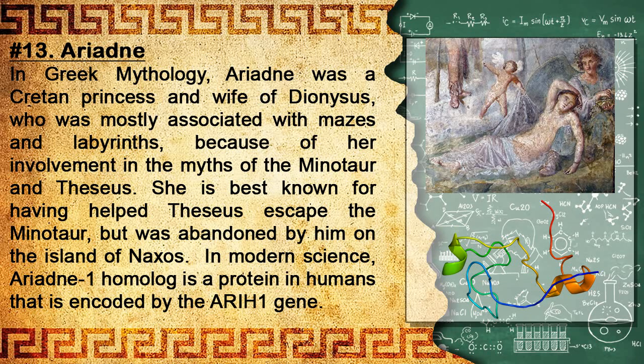Number 13: Ariadne. In Greek mythology, Ariadne was a Cretan princess and wife of Dionysus, mostly associated with mazes and labyrinths because of her involvement in the myths of the Minotaur and Theseus. She is best known for having helped Theseus escape the Minotaur but was abandoned by him on the island of Naxos. In modern science, Ariadne-1 homologue is a protein in humans encoded by the ARIH1 gene.